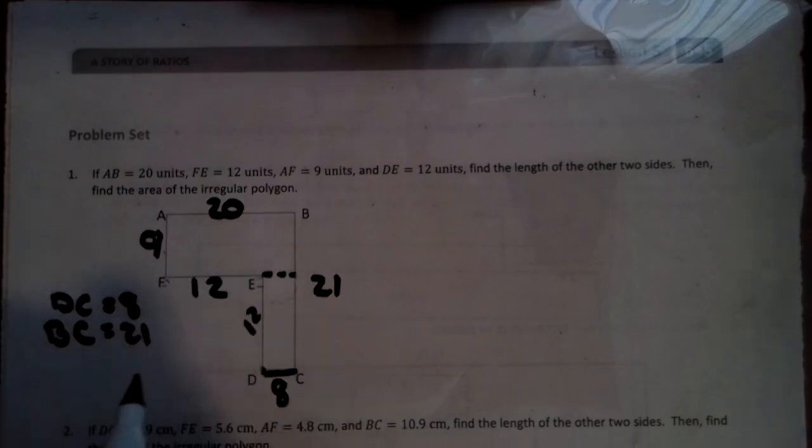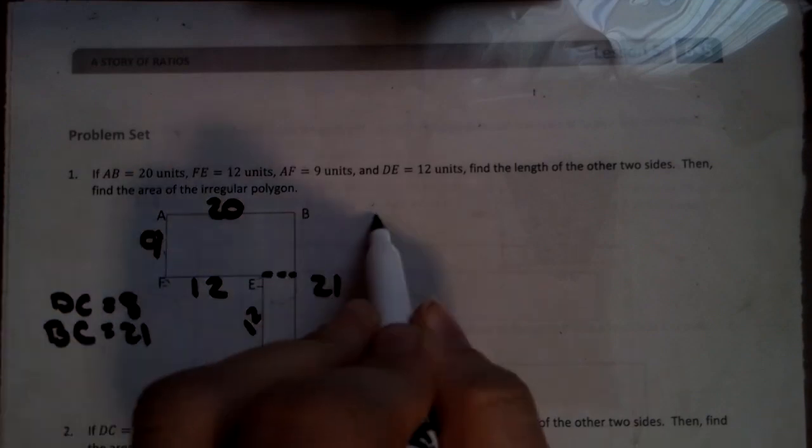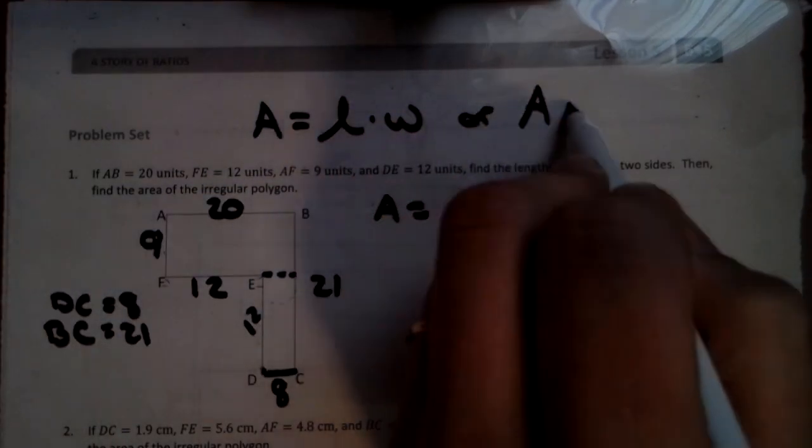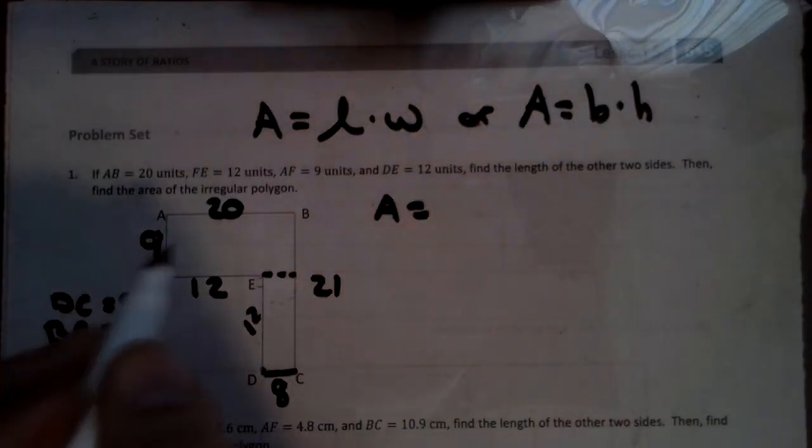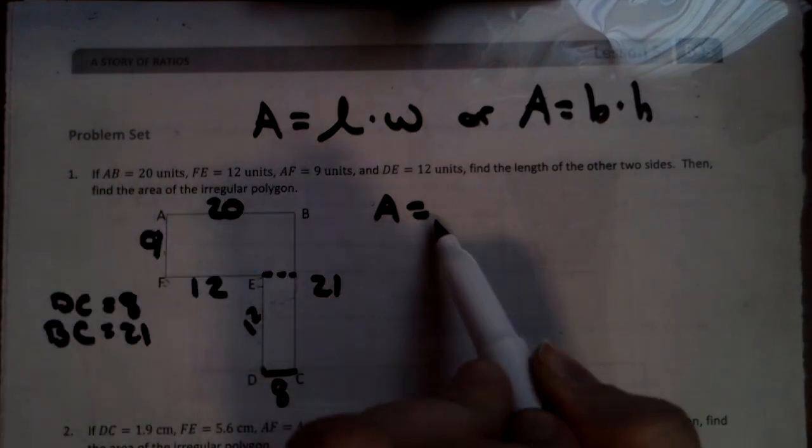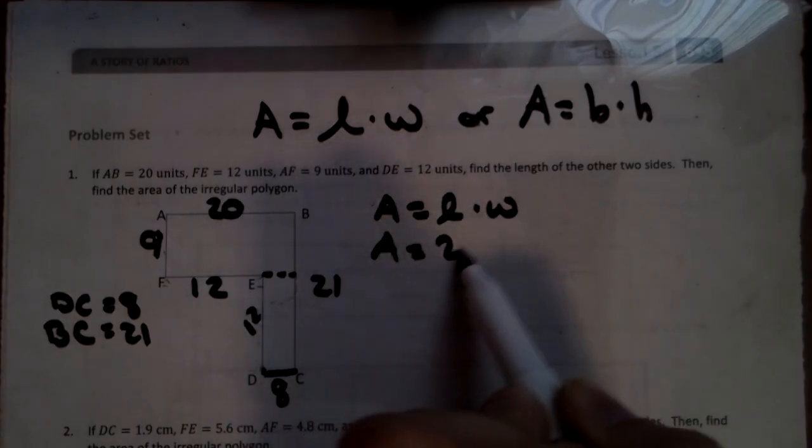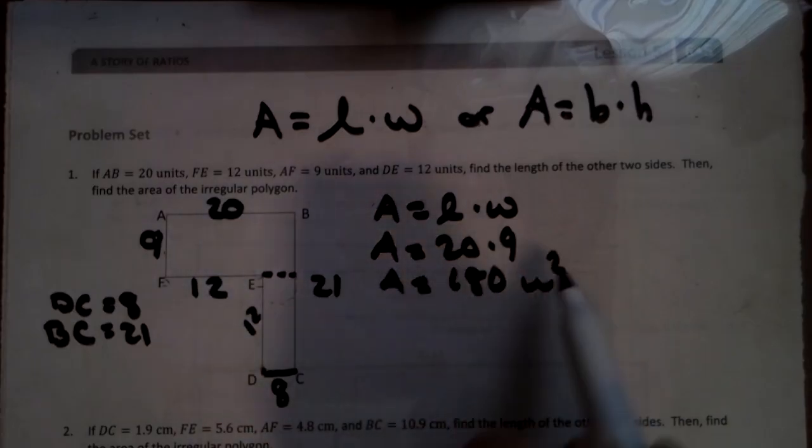I'm more of a cut it this way kind of gal. So I'm going to do a 20 by 9. Area equals length times width or base times height, same concept. We're going to do length times width. Area equals 20 times 9. Area equals 180 units squared.